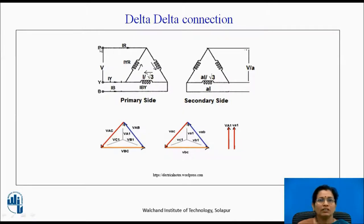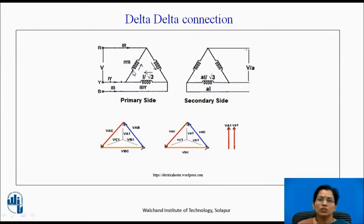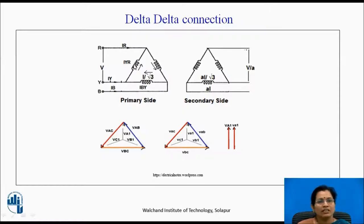The current — line current and phase current — has the relation: the line current is I_L, and if the phase current is I_pH, then the phase current multiplied by root 3 is the line current. So the relation between line voltage and phase voltage is the same, and line current is root 3 times the phase current.